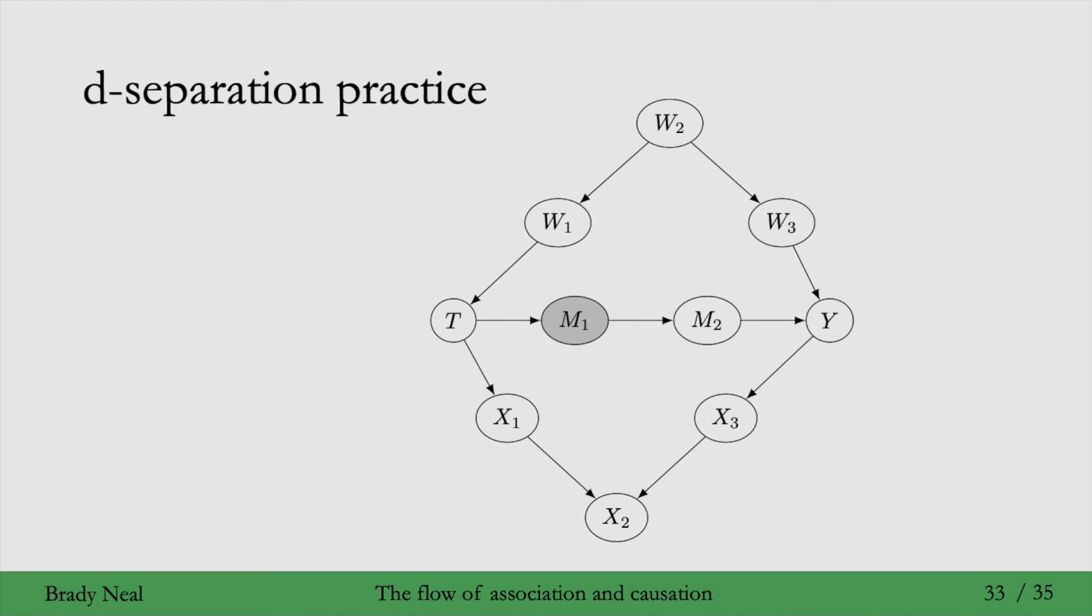What if we were to condition on W2? Then are T and Y d-separated? Yeah, it turns out they are this time. How about instead of conditioning on W2, we condition on W3? Yeah, conditioning on W3 is still enough to block the path through the W variables.